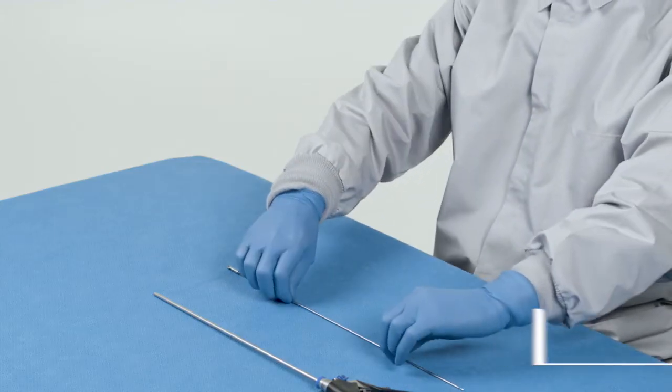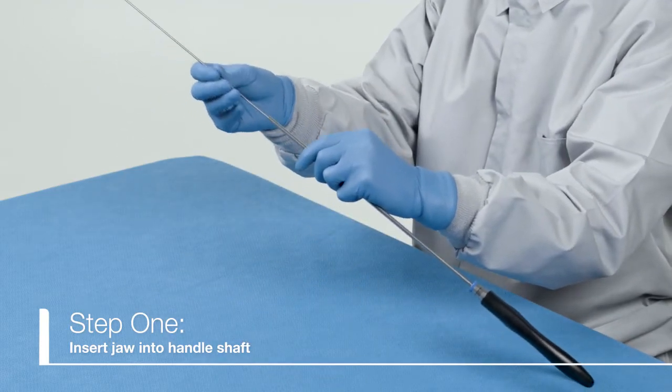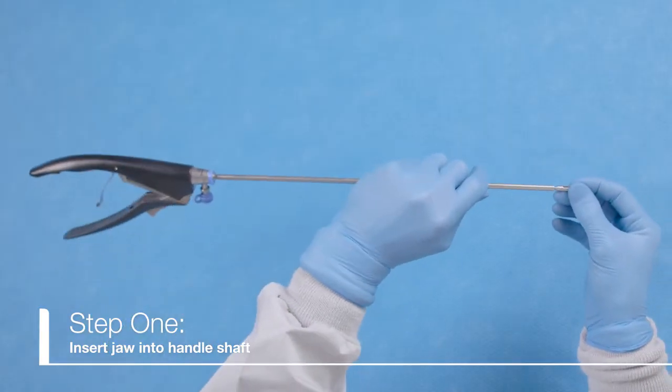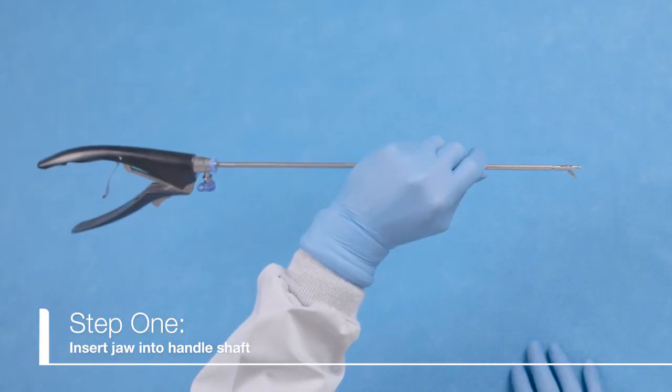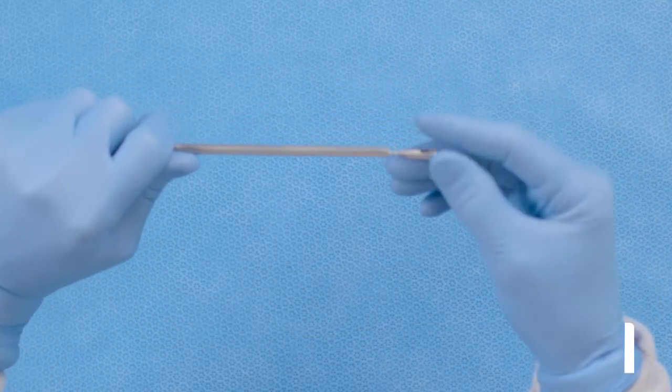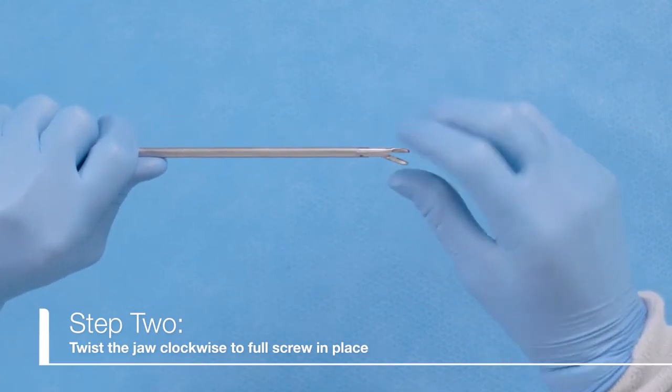The first step in the assembly process is to place the jaw insert into the shaft of the handle. Push the insert fully into the shaft until the bottom lever of the handle deflects upwards. Twist the jaw clockwise until it is fully screwed into the shaft.